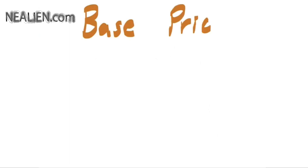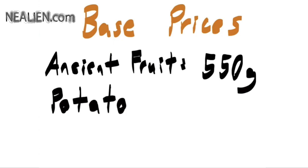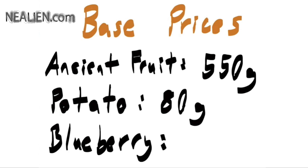So here are a few examples of base prices for some fruits and vegetables. Ancient fruit, which is actually my favorite fruit to use for kegs, is 550 gold. The potato, which is a vegetable, is 80 gold. And the blueberry, which is a fruit, is 50 gold. So those are just three examples. You can always find out what the prices are, and it does maybe change with updates in the game. But you can find out what the prices are by selling them and then checking either with Pierre or in your bin. You can check what the price is for the things that you sell.